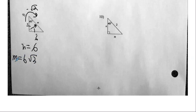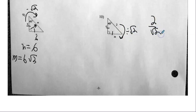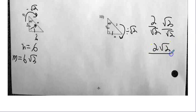Number ten — another 45-45-90. These are equal. What I have is the hypotenuse. So to go to the leg, I'm going to divide by radical two. I can't have a radical in the denominator, so I must rationalize. That gives me two radical two over two — these cancel. So M and N are simply radical two.